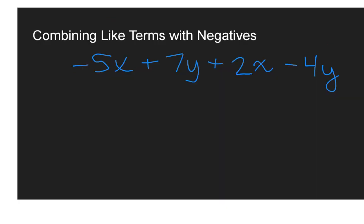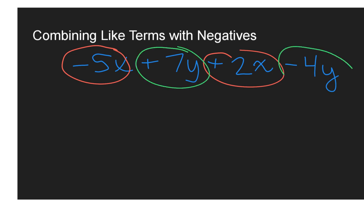Now we're going to look at some examples where we see some negatives thrown in while combining like terms. This is where it becomes really important to look at the sign of the term — whether it's positive or negative. So here I have negative five x plus seven y plus two x minus four y. I'm going to group together the x's and y's: I have negative five x and plus two x, and then I have plus seven y and negative four y.